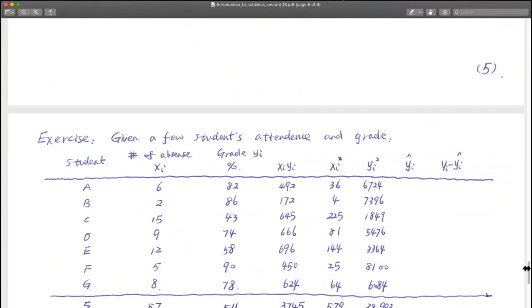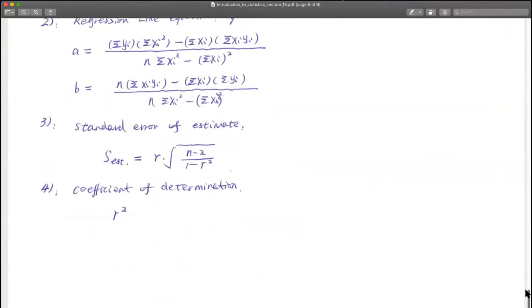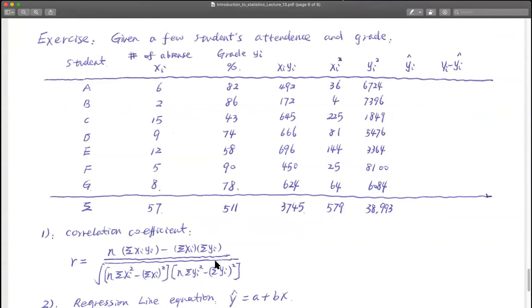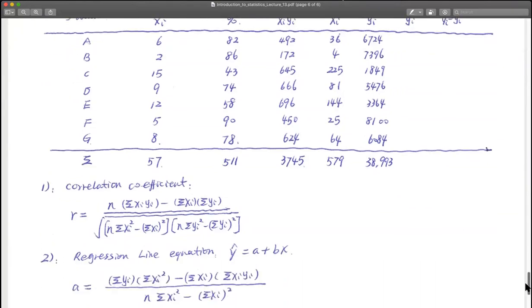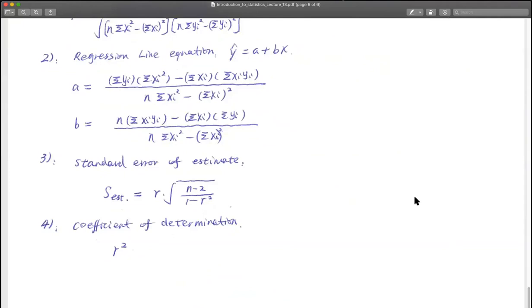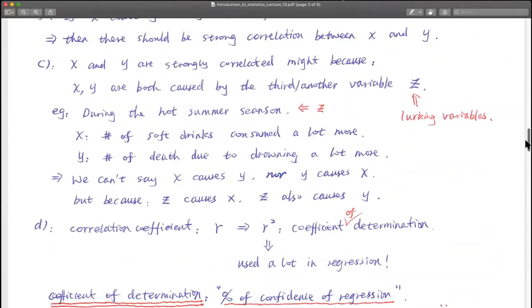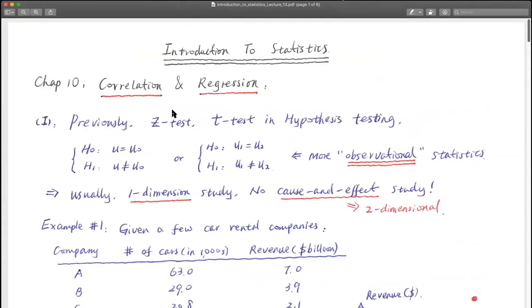There are five practice examples available. If you have time, try them to understand better. However, for the final, focus on the homework from these sections — that will be the most important. So that's chapter 10: the study of correlation and regression, which we call the cause and effect study.